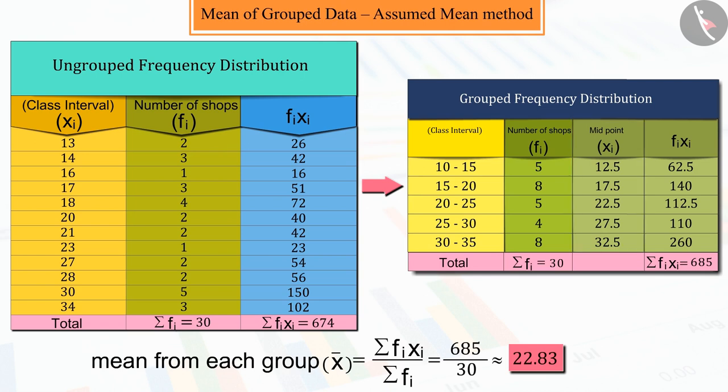sometimes the values of xi and fi are so large that it becomes difficult to find their product. Also, it takes more time. So, can we make the process of finding the product of fi·xi even simpler?